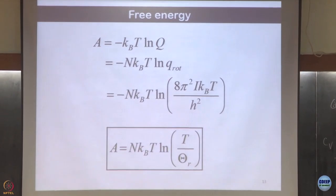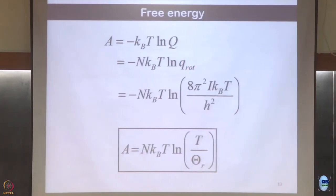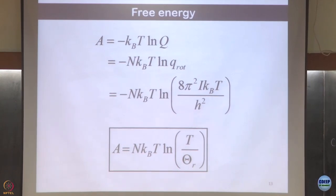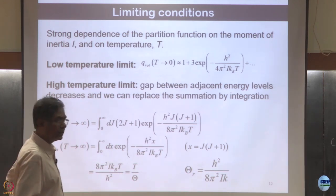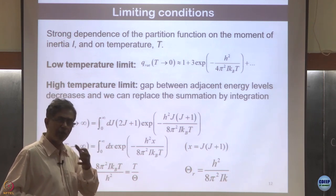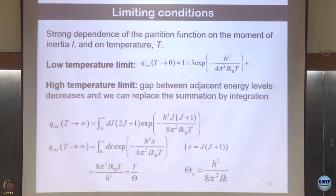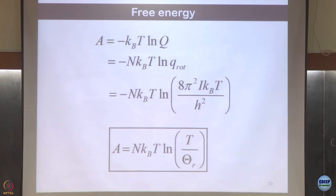Now I go again and compute the free energy: A = −NkT ln q_rotation. In the high-temperature limit, q_rotation gives ln(8π²IkT/h²), and using θ_r, I get the neat expression for free energy: A = NkT ln(T/θ_r).